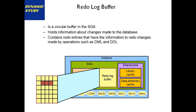Redo log buffer is a circular buffer in the SGA. When it fills, it informs the log writer, which writes data to the online redo log file. It holds information about changes made to the database. Once we commit transactions, the data goes to the redo log buffer. It contains redo entries for DML and DDL operations. When the buffer is one-third full or 3 MB full, it notifies the log writer to write data to the online redo log file.